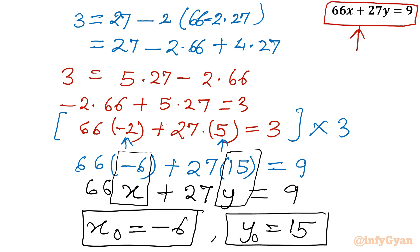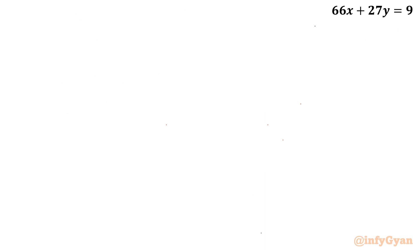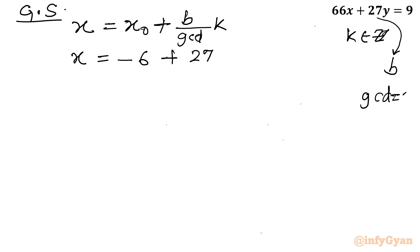Now let us write the general solution also. So I can write general solution formula first. x will be equal to x0 plus b over gcd times k, where k belongs to integer. Now I will write x is equal to, what was x0? It was minus 6. What is b? b is 27. What was gcd? gcd was 3. So I will divide by 3 times k. So x will be equal to minus 6 plus 9k. General solution for x, where k belongs to integer.